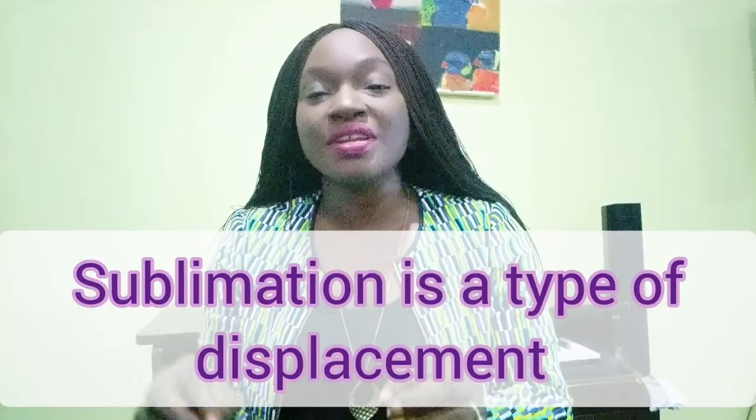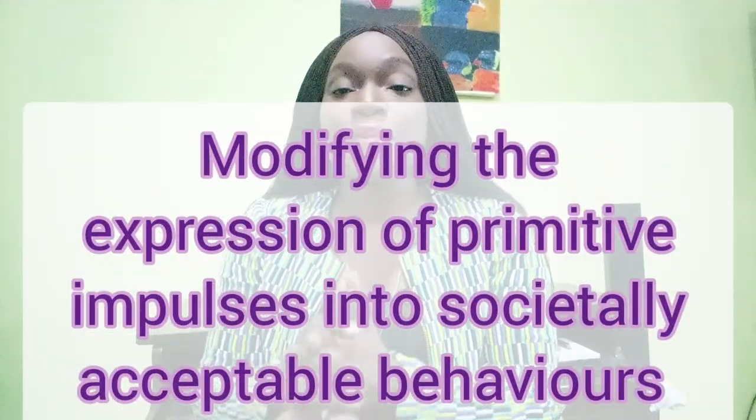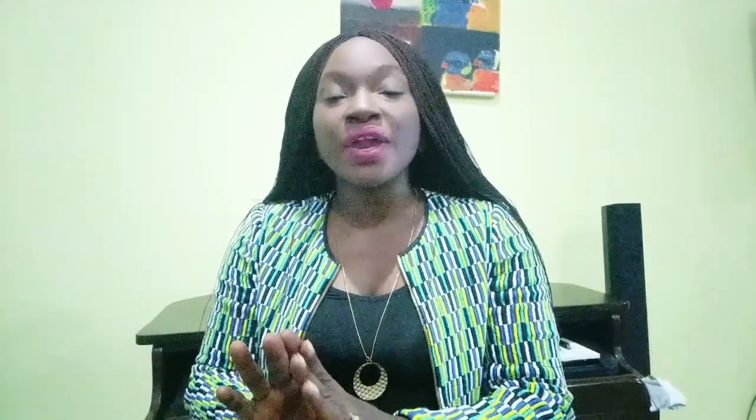Sublimation is a type of displacement. It involves modifying the expression of primitive impulses into societally acceptable behaviors. Primitive impulses are crude and mostly societally unacceptable — when we act impulsively without thinking of consequences, our behaviors may not be acceptable. The 'id' part of our personality is the primitive part; it is unrefined, acts impulsively, and deals primarily with meeting the needs of the individual without considering consequences. We have three parts of our personality: the id, the ego, and the superego.